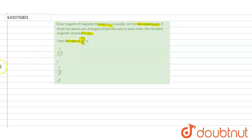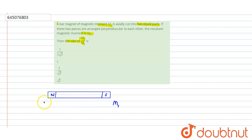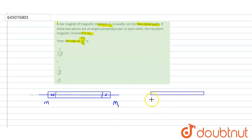In this question we have given a bar magnet of magnetic moment M1. Now let us say this is the bar magnet of magnetic moment M1. There is a north pole and this is the south pole, and the magnetic pole strength of the pole is small m. Now this magnet is cut into two equal parts about its axis, meaning it is cut through this line. So it will convert into two bar magnets of same length but having different magnetic moment or different pole strength.